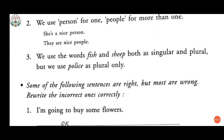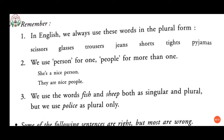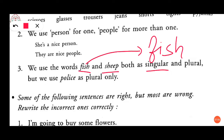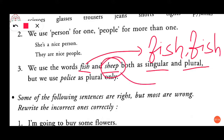Third point: we use the words 'fish' and 'ship' both as singular and plural. So whether we are making a singular or plural sentence, we use fish or ship without adding S. But we use 'police' as plural only — we will always use police as plural.